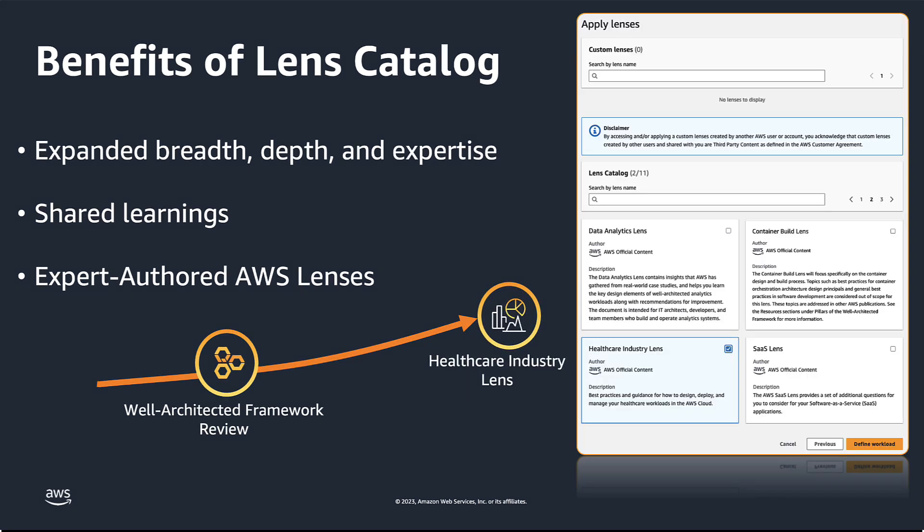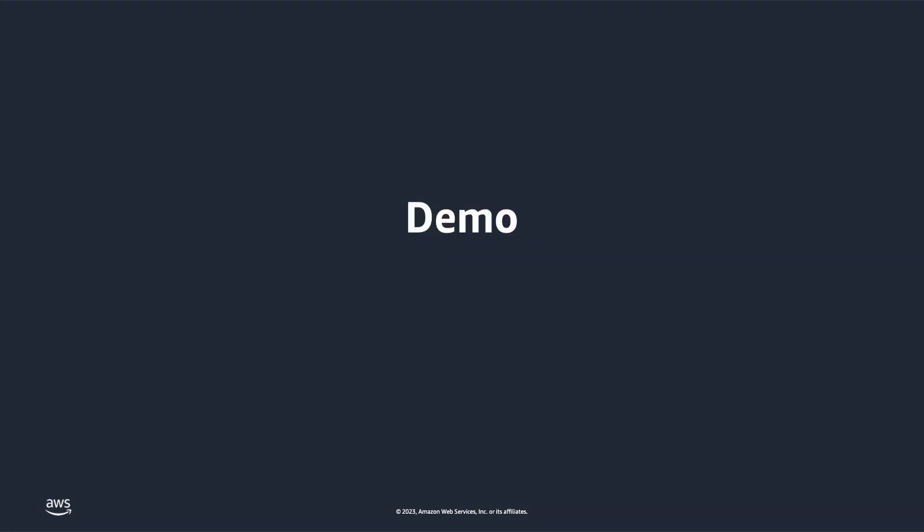This is where Lens Catalog comes in. To fully evaluate this workload, the organization can use a lens from the Lens Catalog together with the AWS Well-Architected framework. In this case, the Healthcare Industry Lens can be used to ensure their workload complies with specific healthcare regulations. The Healthcare Industry Lens augments the Well-Architected framework and highlights additional key principles that should be considered for healthcare workloads.